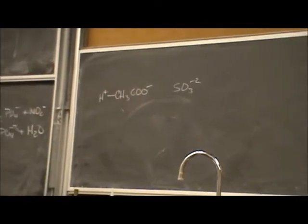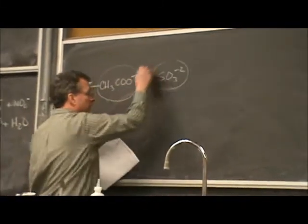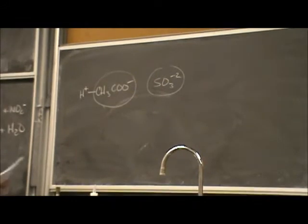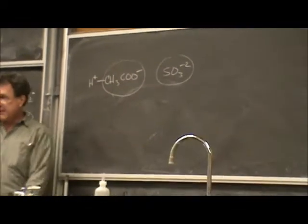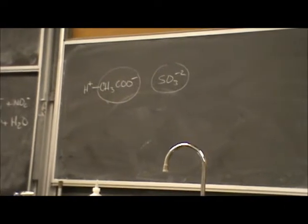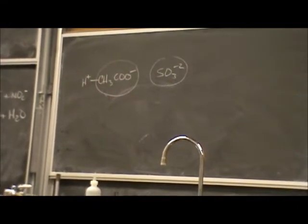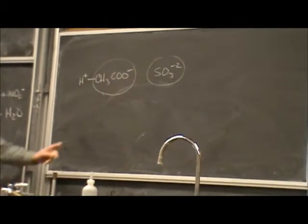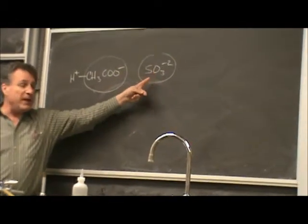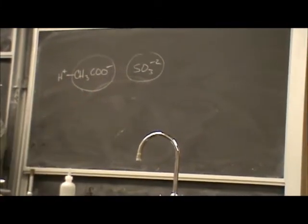Yeah? So when we want to talk about whether this acid-base reaction is going to be spontaneous or not, we want to focus on the strength of the two bases. And according to the table, which is the stronger base? SO3-2? Yeah? And so the SO3-2, the stronger base, should be able to take the hydrogen ion away from the weaker base. Get it?